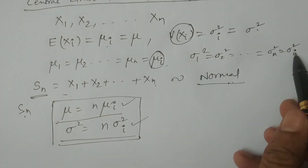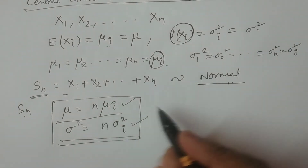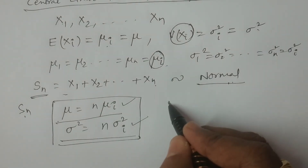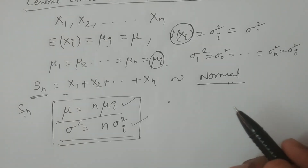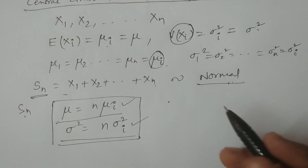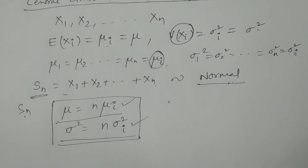If you consider μᵢ and σᵢ², or just μ and σ², then the mean is nμ and variance is nσ². This is the Central Limit Theorem for independently and identically distributed random variables. Hope you understand. Thank you.